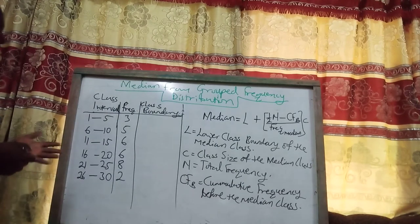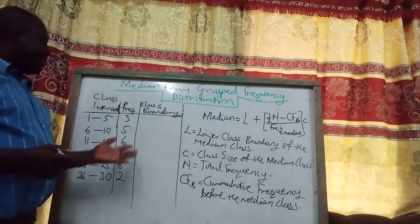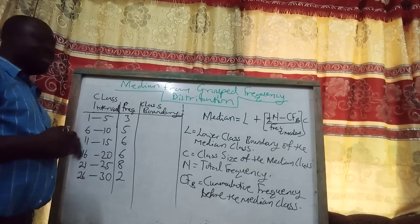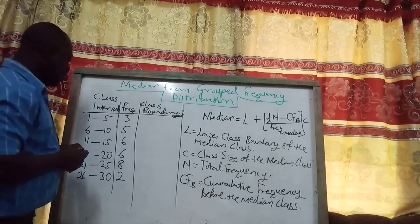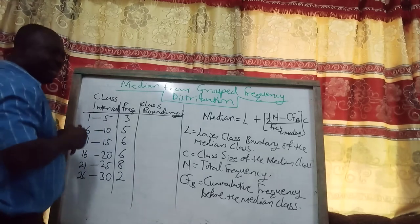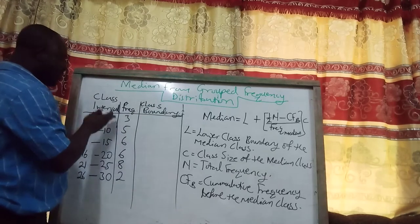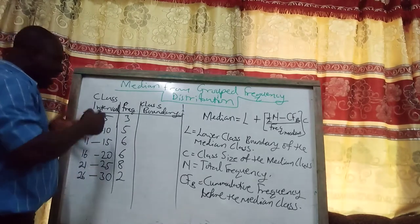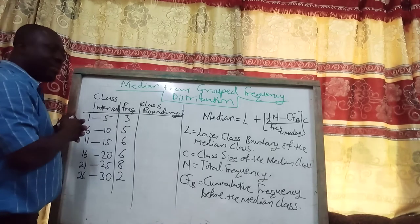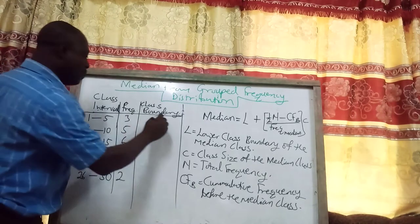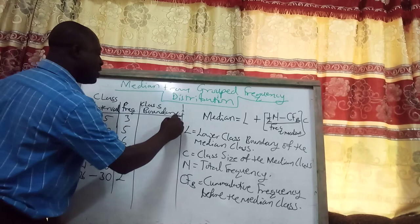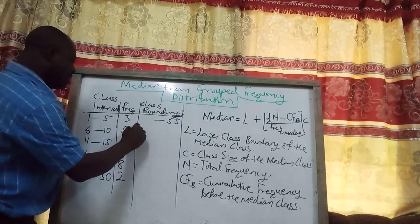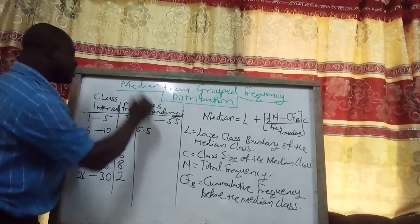We should find the class boundary for each class interval. To find the class boundary, we start with the upper class boundary of the first class. Between 5 and 6, we take the halfway point: 5 plus 6 equals 11, divided by 2, giving us 5.5. So 5.5 is the upper class boundary of the first class, and it becomes the lower class boundary of the next class.